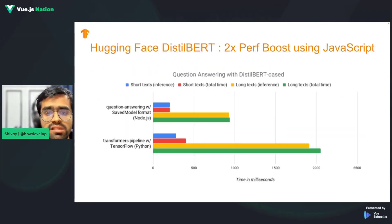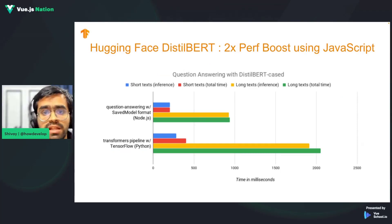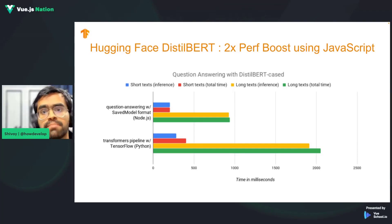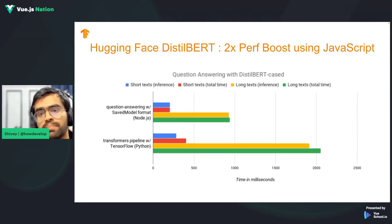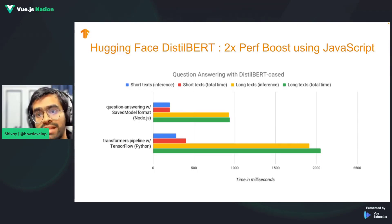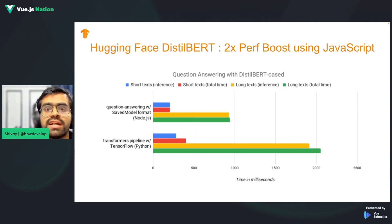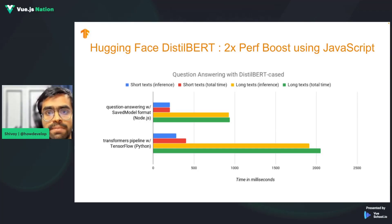If you compare the performance of running machine learning models with JavaScript versus Python, you can see that in many different types of machine learning models, the performance you get with JavaScript is actually better than even Python — which is generally considered a much more dedicated language for running machine learning applications. These are some of the biggest benefits that allow any JavaScript or Vue developer to integrate machine learning into their applications and make really meaningful, intuitive applications.